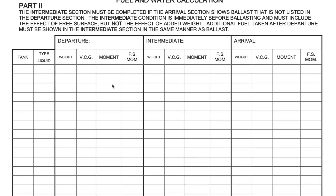This page is divided into three sections: departure, intermediate, and arrival. The top of the page states that the intermediate section must be completed if the arrival section shows ballast not listed in the departure section. The intermediate condition is immediately before ballasting and must include the effect of free surface but not the effect of added weight. Additional fuel taken after departure must be shown in the intermediate section in the same manner as ballast.